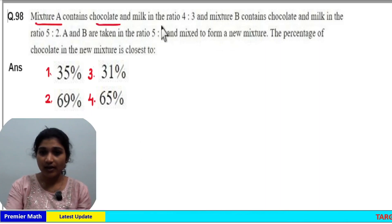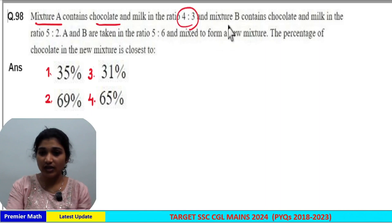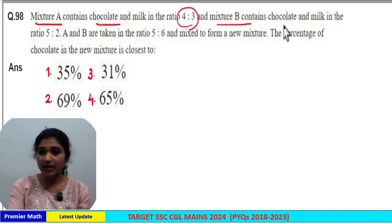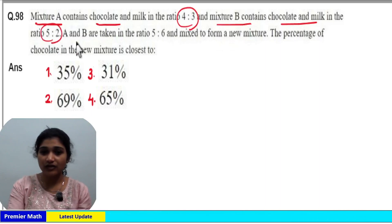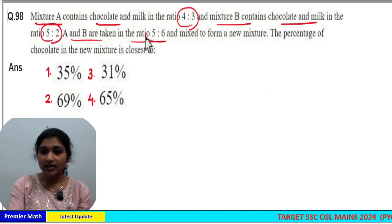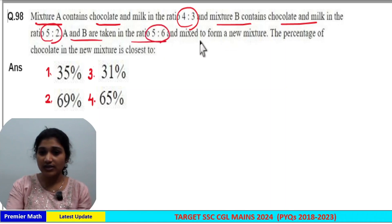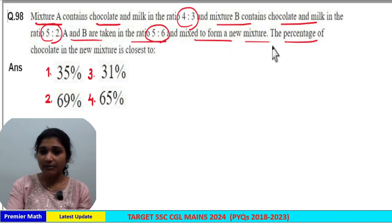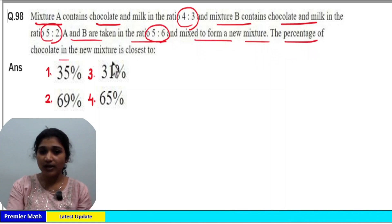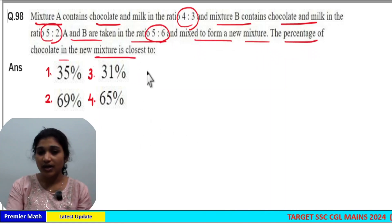Mixture A contains chocolate and milk in the ratio of 4 to 3, and mixture B contains chocolate and milk in the ratio of 5 to 2. A and B are taken in the ratio of 5 to 6 and mixed to form a new mixture. The percentage of chocolate in the new mixture is closest to?